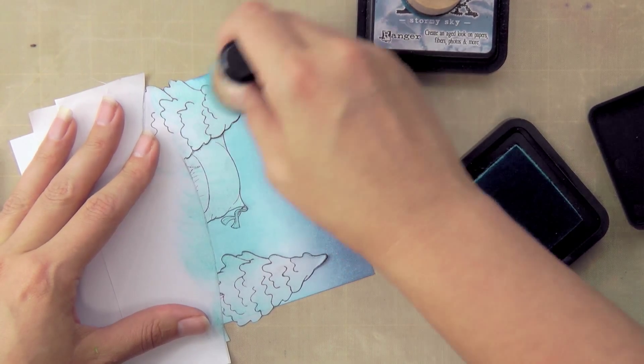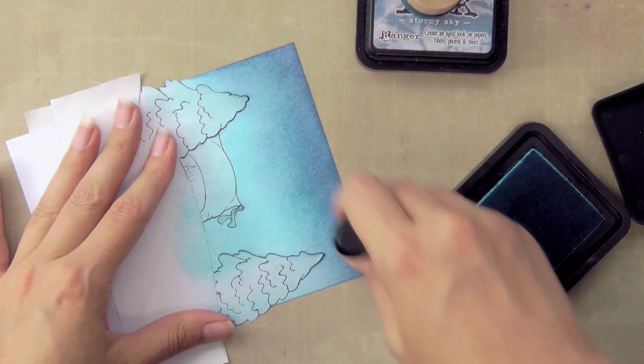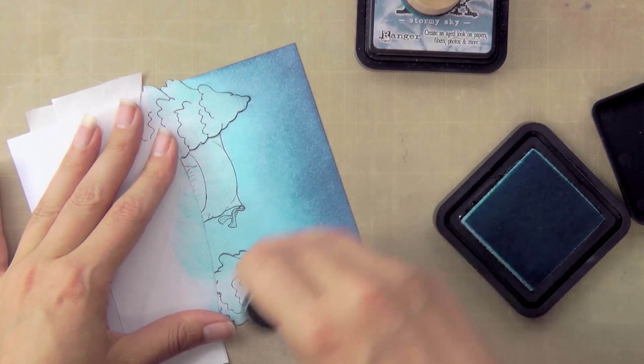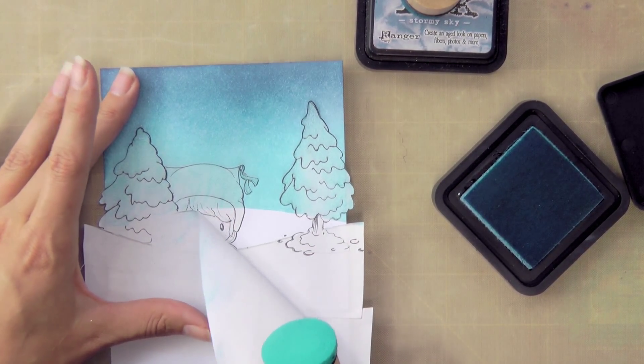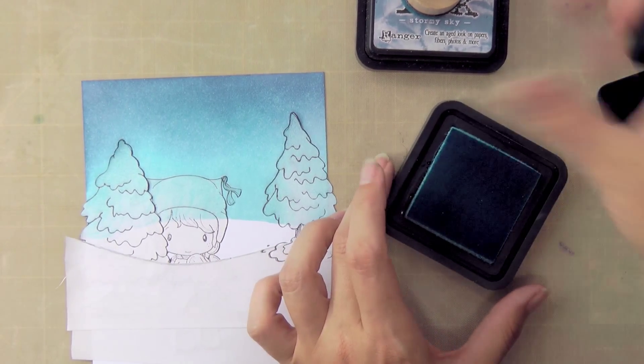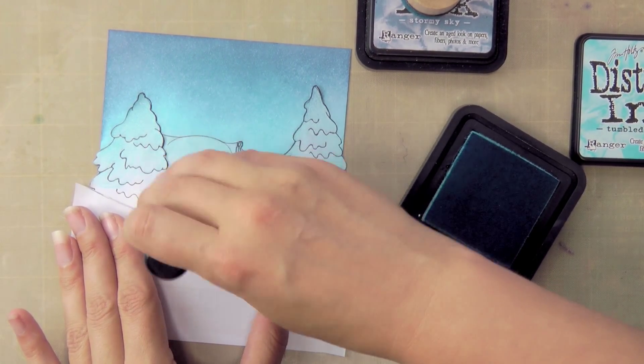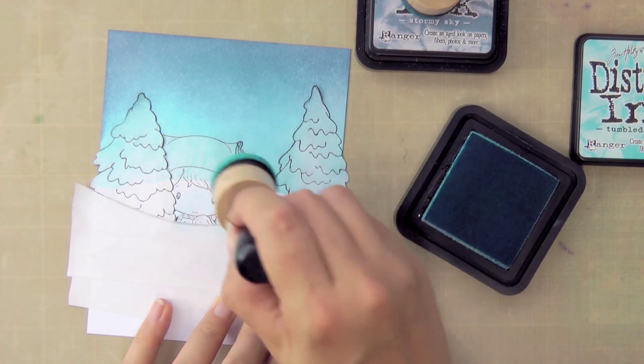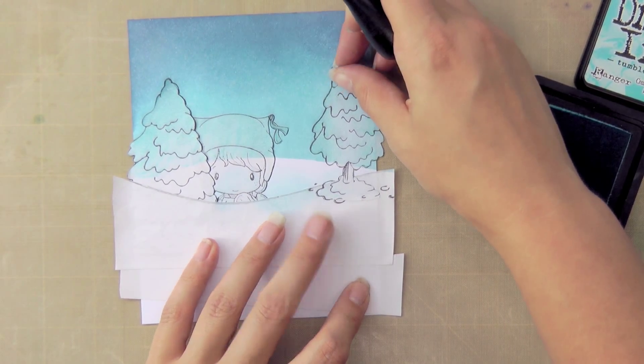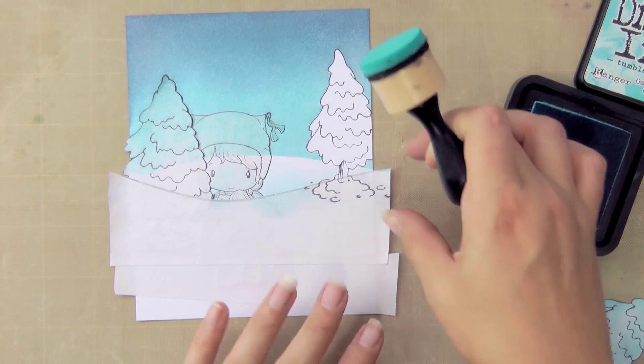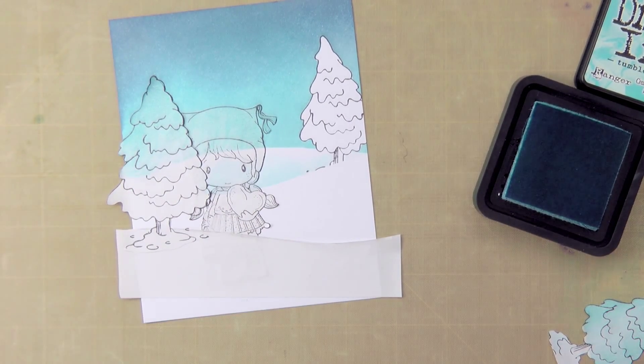I'm going to blend the two colours with the tumbled glass. And I'm starting over the dark and then bringing that down towards the light because I don't want to pick up any of that stormy sky and take it over the bottom. So I'm just trying to be careful about that. So now we can peel off the top snow slope and to help add definition to the next snow slope just want to add a little bit of ink at the bottom there. Be careful not to cover it all. And as we pull off the mask you'll see how that creates the definition or that defines the next snow slope.